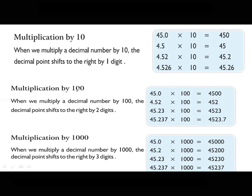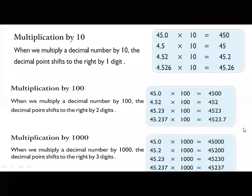For multiplication by 100, the decimal point moves to the right by two digits. For example, 45.0 multiplied by 100 gives 4500 — since 100 has two zeros, the decimal point shifts right by two digits. The same rule applies for multiplication by 1000: since 1000 has three zeros, the decimal point shifts right by three digits. For example, 45.0 multiplied by 1000 gives 45,000.